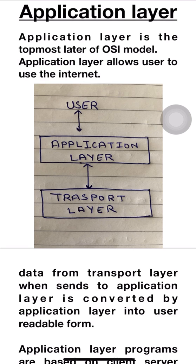The application layer allows users to use the internet. As you can see in this diagram, when data is sent to the application layer, the application layer converts it to a user-readable format.